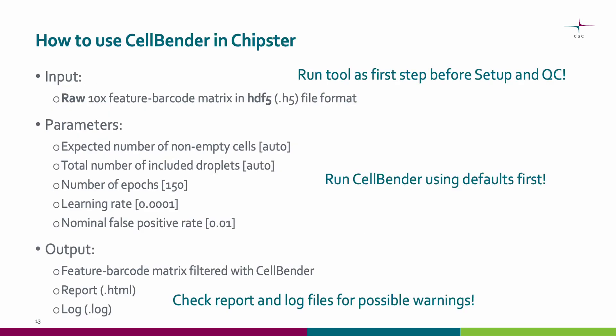Now we will look at how to use CellBender in Chipster. CellBender can be used as a first step before the Setup and QC tool. Use the raw feature barcode matrix in HDF5 file format as input to the CellBender tool. Run CellBender using default parameter values first. Then check the automated report and log files to see if changes are needed to these parameter values. These are the five different parameters available in Chipster.